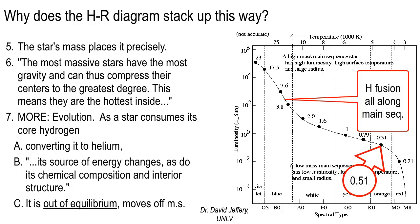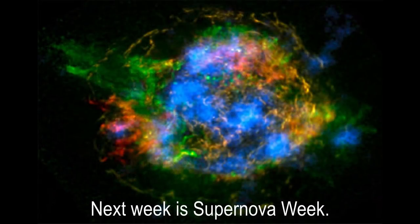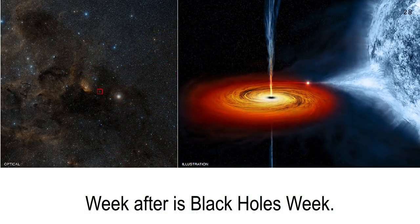Leaving the main sequence means the star is going to its retirement home — it's moving to Florida. It might go to white dwarf status or red giant, but eventually if it's a big enough star it's going to go into supernova. Next week you can start reading about supernovas — it's going to be our main topic. And then the very last week of the semester will be black holes week. All right, you're dismissed — I'll see you next week for supernova week.